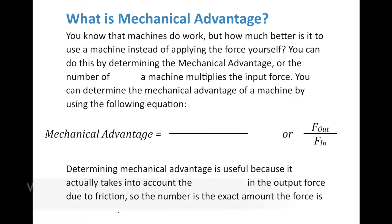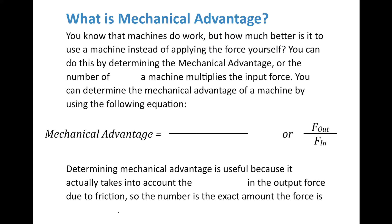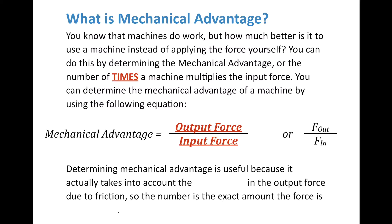Before we get into simple machines, let's do a brief segue and talk about mechanical advantage. We want machines to work really well, but how much better is it to use a machine rather than do it ourselves? That's why we can determine the mechanical advantage — the number of times a machine multiplies the input force. You can determine it using this equation: mechanical advantage equals the output force divided by the input force, or F-out divided by F-in.